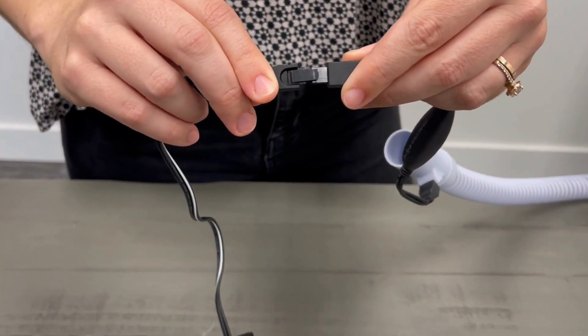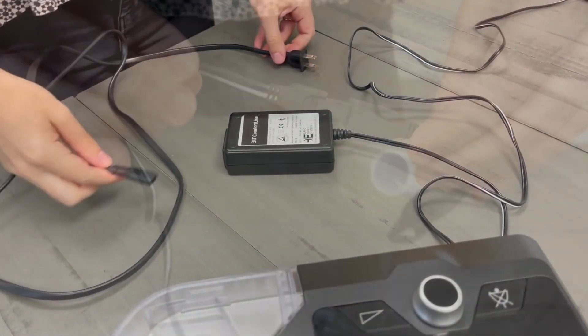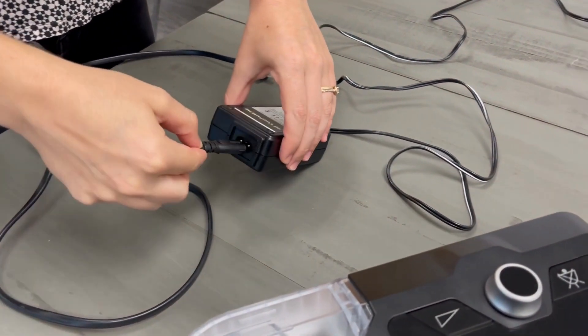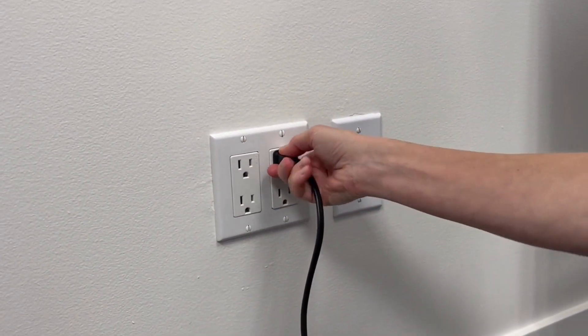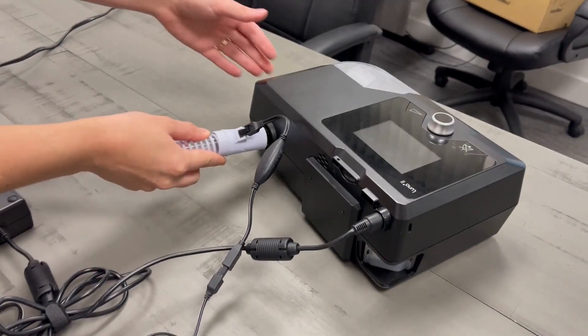The power cord will be plugged into the tubing adapter, then into the power source. Finally, the cord will be plugged into the wall and the other end will plug right into the back of the unit.